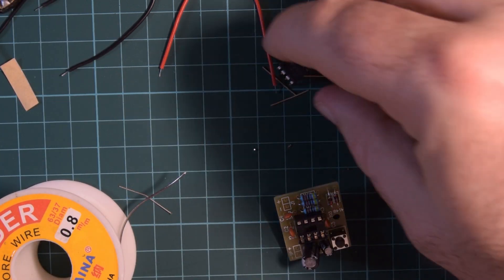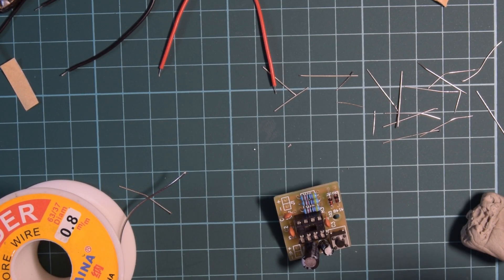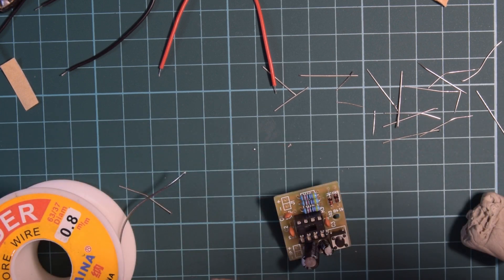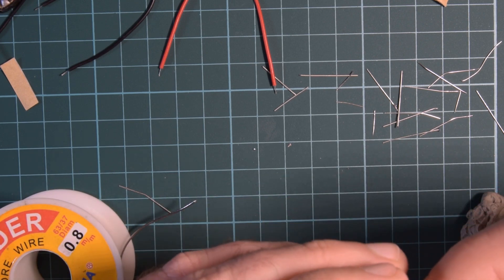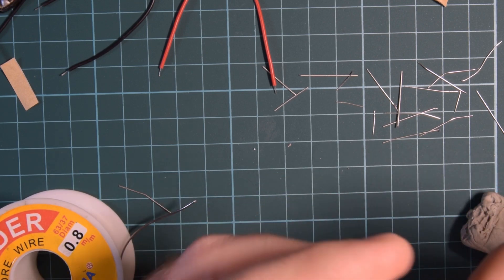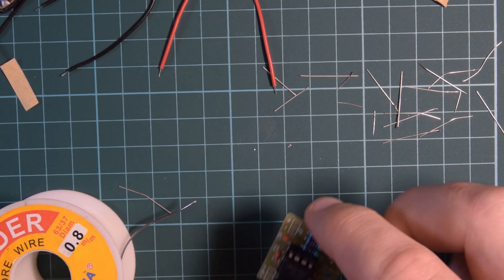So speaker and jumper. Now we'll put the 555 timer in, just squeezing the legs together a little bit. And pop that in there. There we go.